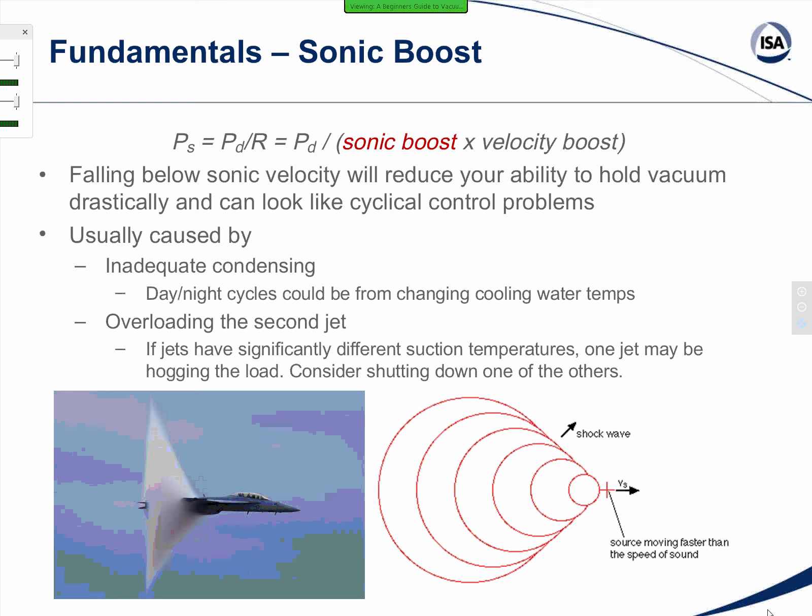Generally that's why when you hear a vacuum system that's working well, the jet ejectors are going to be roaring pretty loudly. This is them being up at that sonic boost range. Falling below sonic boost is going to greatly reduce that R factor and it's going to reduce your potential suction pressure. Things to check to see whether or not you're in that sonic boost range are to look at your condensing, make sure that you have adequate condensing, and check to see if maybe one of your jets is overloaded if you have a series of them or parallel ones in place. One jet in parallel with another might be hogging a lot of the load, and so your second jet is out of that sonic boost range. You can consider turning it off completely and putting that extra load on the heavy hitter at the lower ranges that you need.